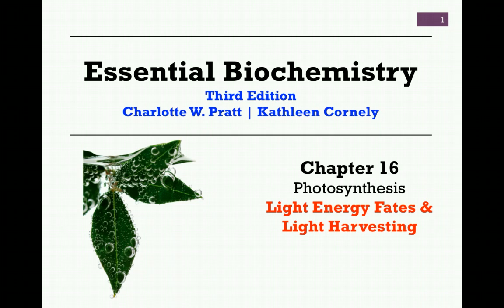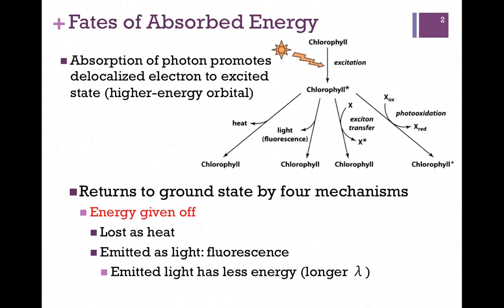In our next lesson on photosynthesis from Chapter 16, we want to look at the possible fates of the light energy absorbed and also at the light harvesting complex. Here we have our chlorophyll at the heart of our reaction center in photosynthesis, depicted in our figure at the top of the screen. It's going to absorb a photon of light and that will promote a delocalized electron to an excited state — a higher energy orbital, notated here by the chlorophyll with the asterisk. This is a higher energy state, making it very unstable, so it will spontaneously return to the ground state in one of four ways.